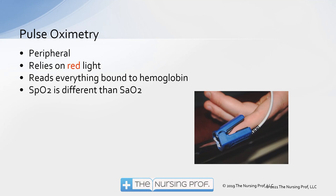Also keep in mind that the pulse ox relies on red light, which can be interfered with by many other types of light. So if you're having trouble getting a pulse ox on somebody, stick it under the covers or under something to get it in the dark — you might get a better waveform. It reads everything that's bound to hemoglobin, including carbon monoxide. Remember that SpO2 is different than SaO2: SaO2 comes from your blood gas, SpO2 comes from the pulse ox, and SpO2 is peripheral and indirect because we're using a light source outside the body.